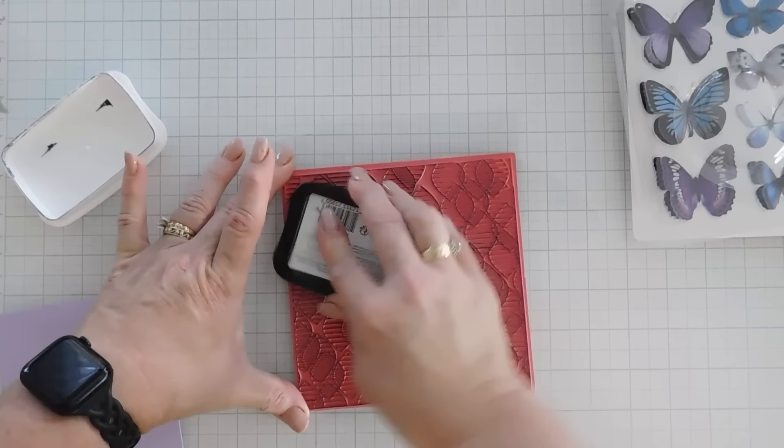The background stamp that I'm going to use is from Simon Says Stamp, and it is called Overlapping Drops. Kind of reminded me of little butterfly wings when we put it sideways. So I thought we would stamp this. I'm going to stamp it with my black ink. I'm just going to use Memento because it dries pretty fast. And I'm going to ink this up.